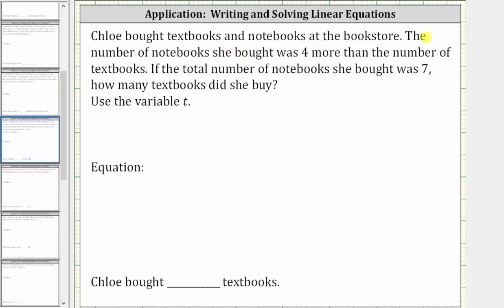Chloe bought textbooks and notebooks at the bookstore. The number of notebooks she bought was four more than the number of textbooks. If the total number of notebooks she bought was seven, how many textbooks did she buy?